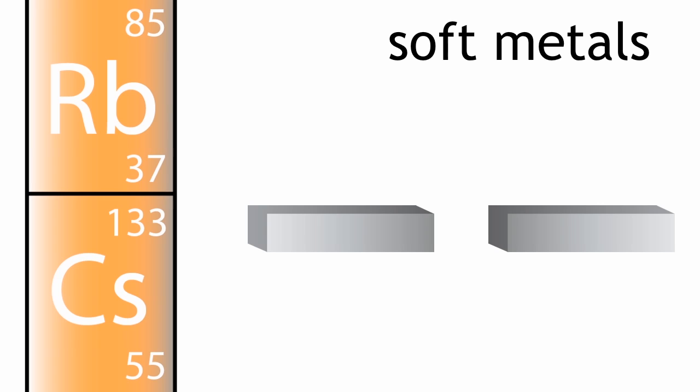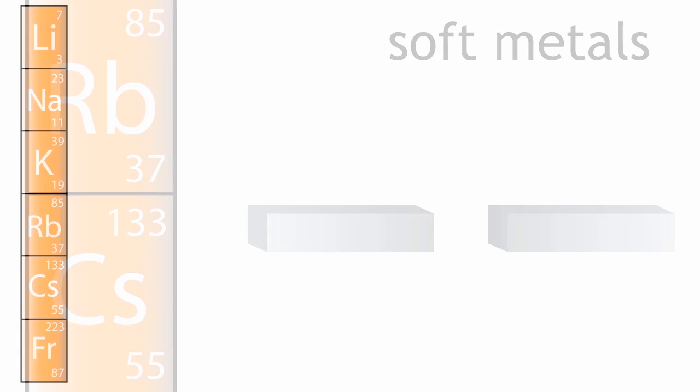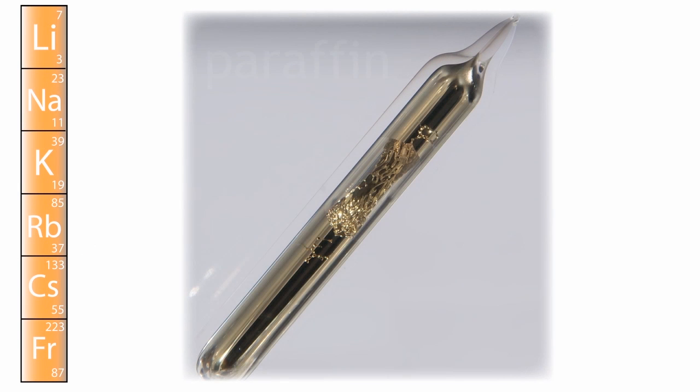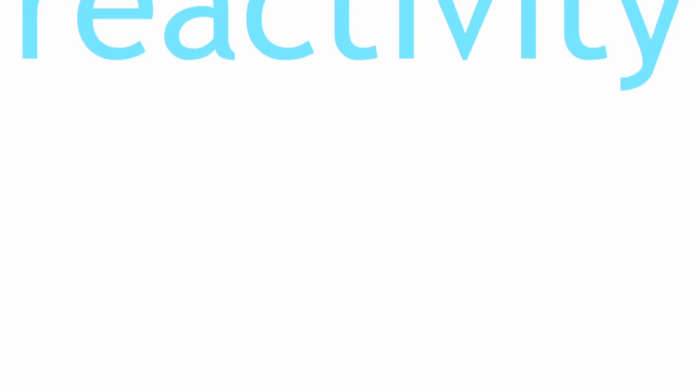Not that you would be wise to try and cut rubidium and caesium. All of the elements are stored in containers that either have paraffin or inert gases in. This is because of their reactivity.